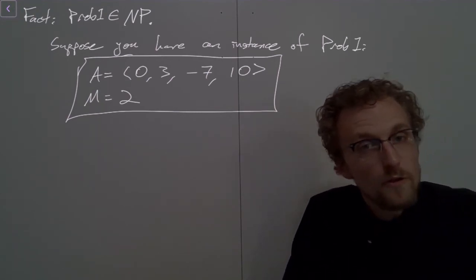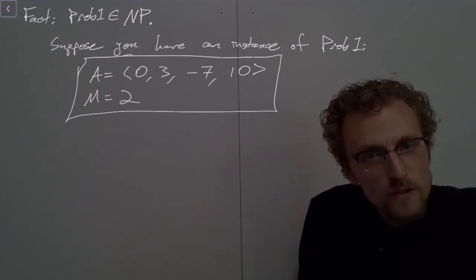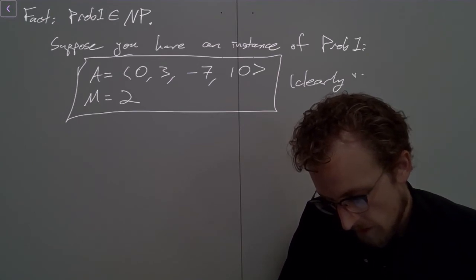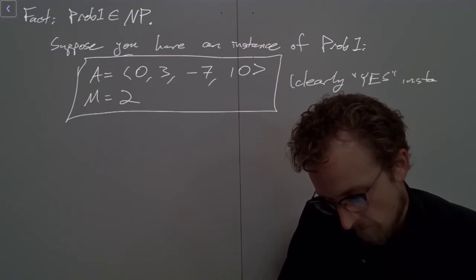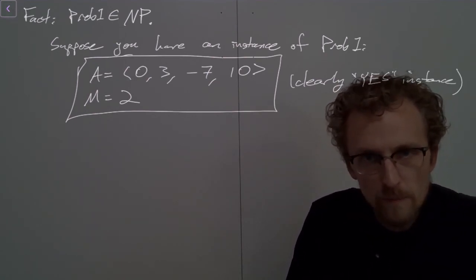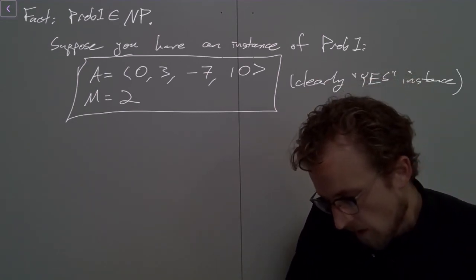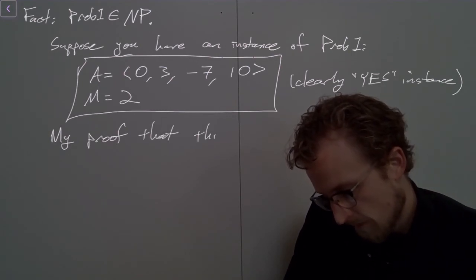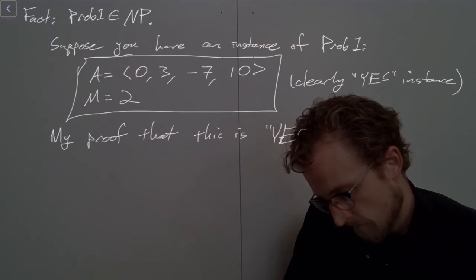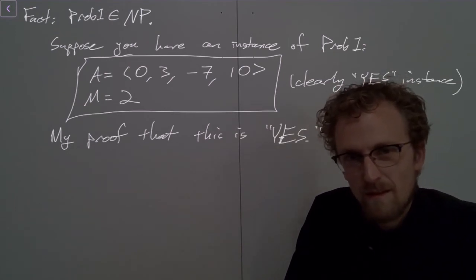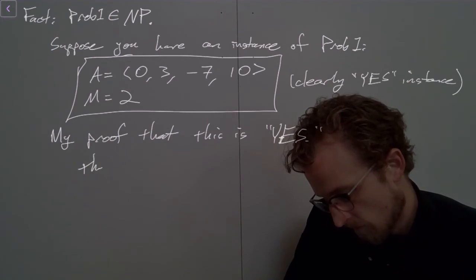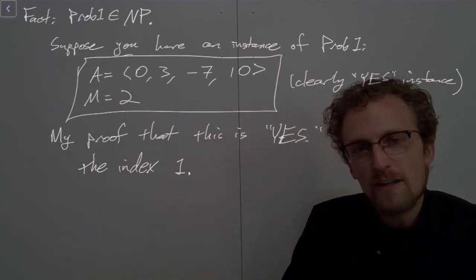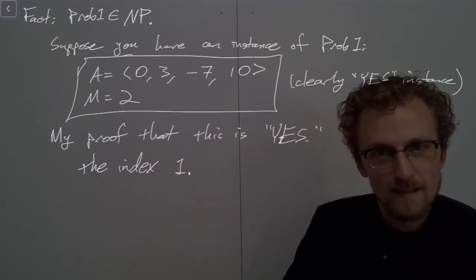So here's the instance of the problem. I'll come to you with a proof that this is a yes instance. We know this is clearly a yes instance — there are two elements bigger than the threshold: 3 and 10 are both bigger than 2. Here is my proof that this is yes: my proof is an index. The index I will give you is index 1 — the location in the array of an element that verifies this is a yes instance. I say, go look at index 1.